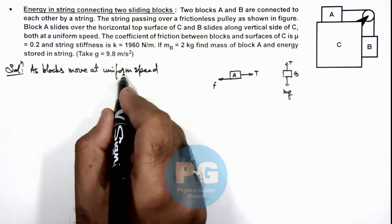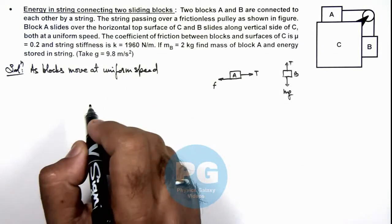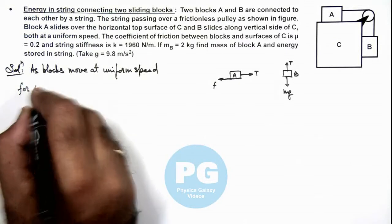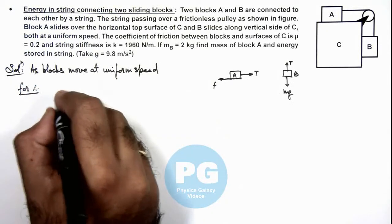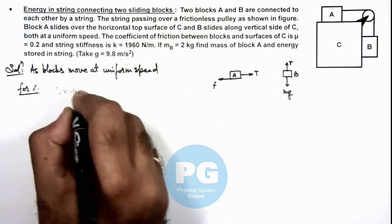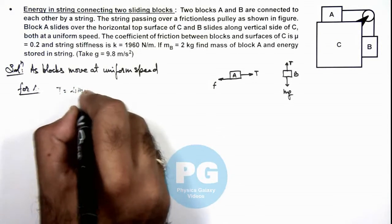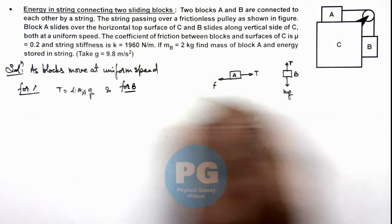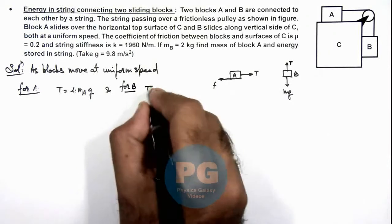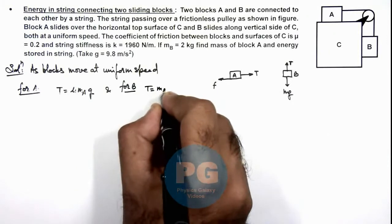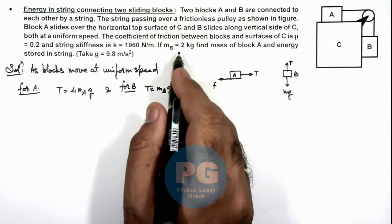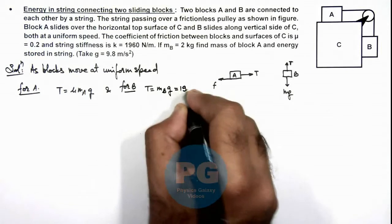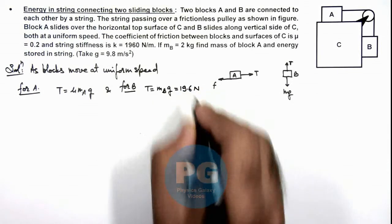So here we can write: as the blocks move at uniform speed, the forces must be balanced. So tension should be equal to μ multiplied by mₐg. And for B if we write, it should be giving us T is equal to mᵦg. And the value of mass of block B is given as 2 and g is 9.8, so this can be written as 19.6 newtons, that is the tension in the string.